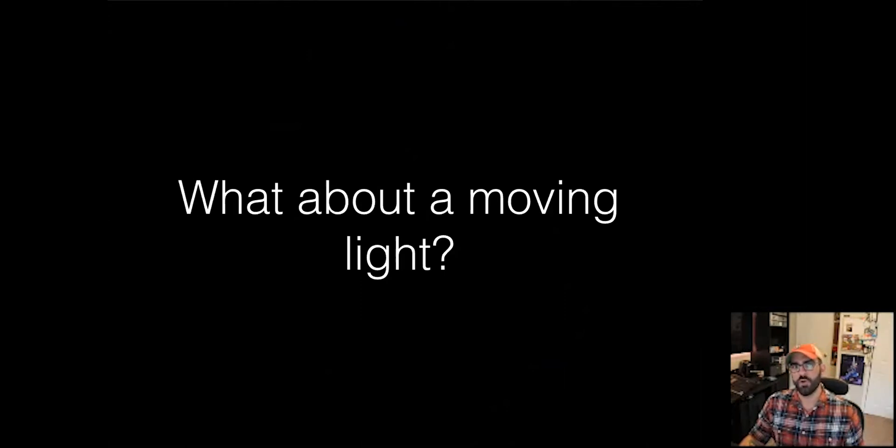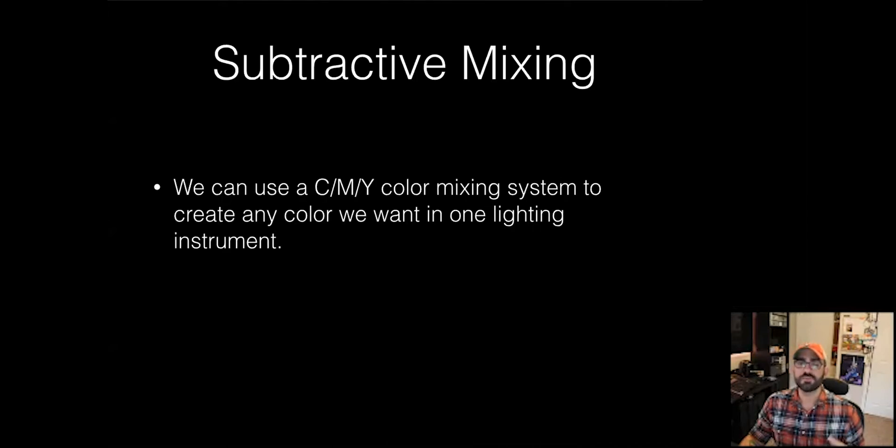Moving lights use what's called a subtractive mixing system. A subtractive mixing system uses the opposite of our RGB, opposite of our primaries. It uses CMY: cyan, magenta, and yellow mixing.